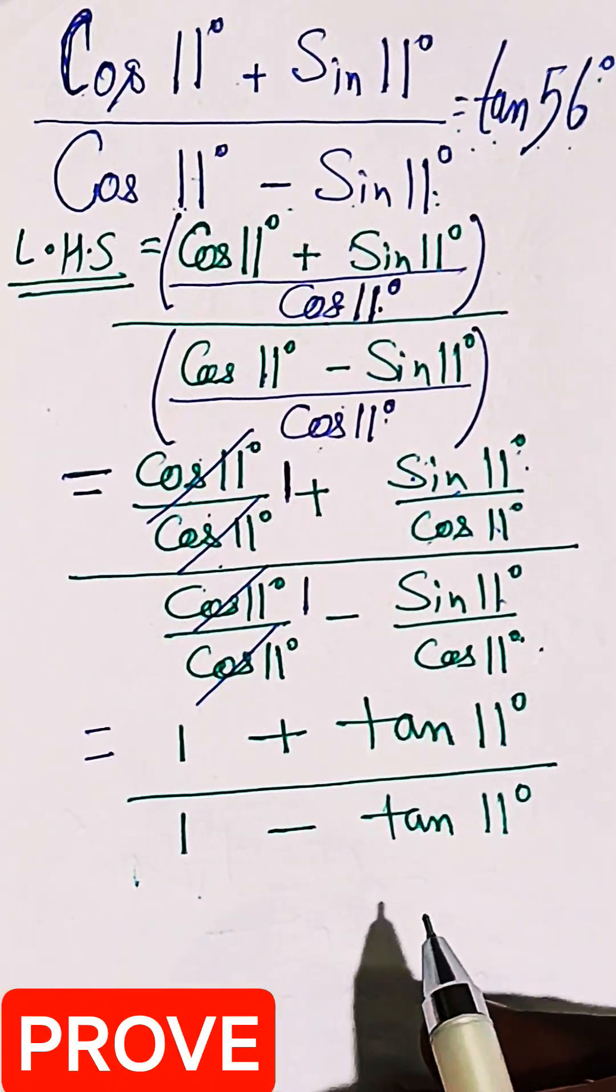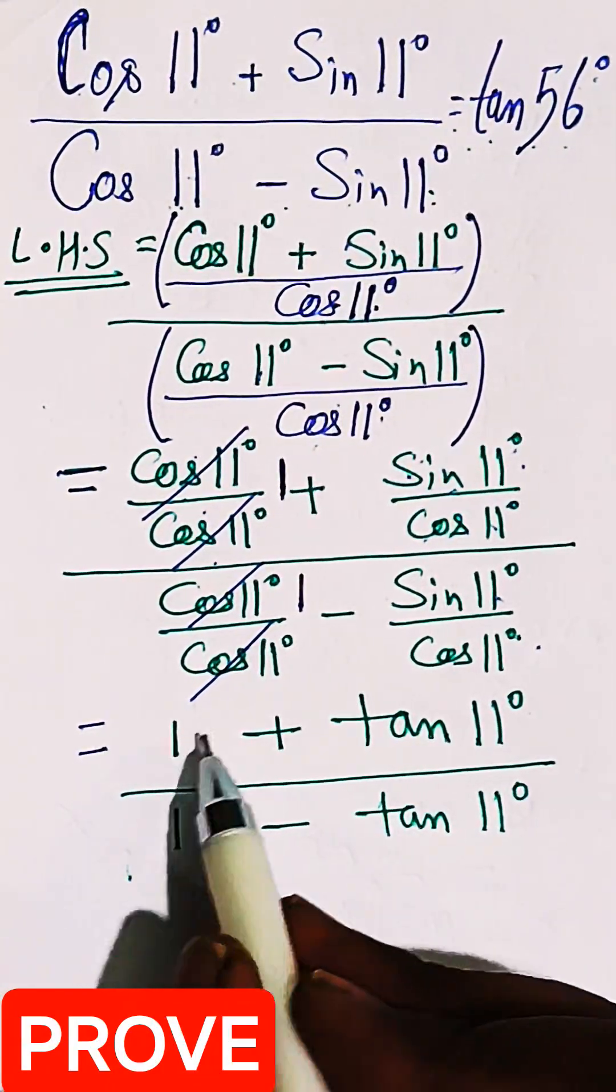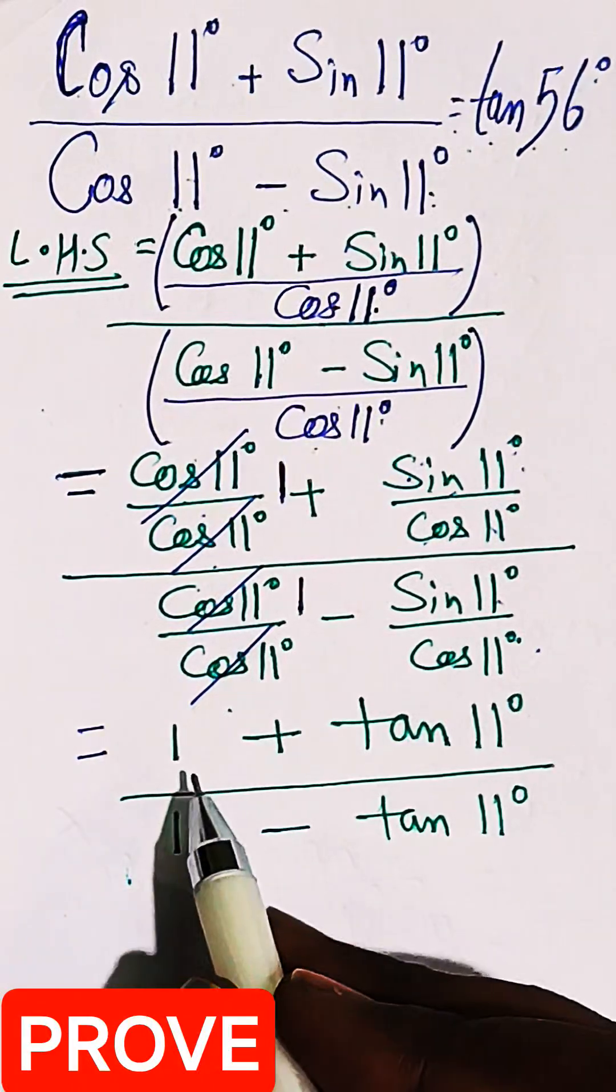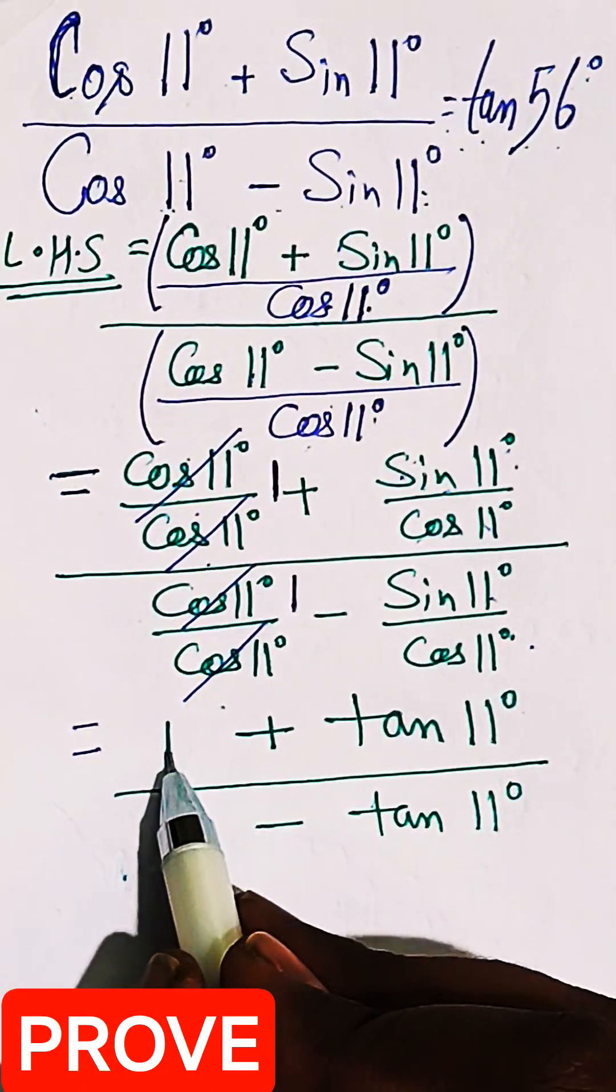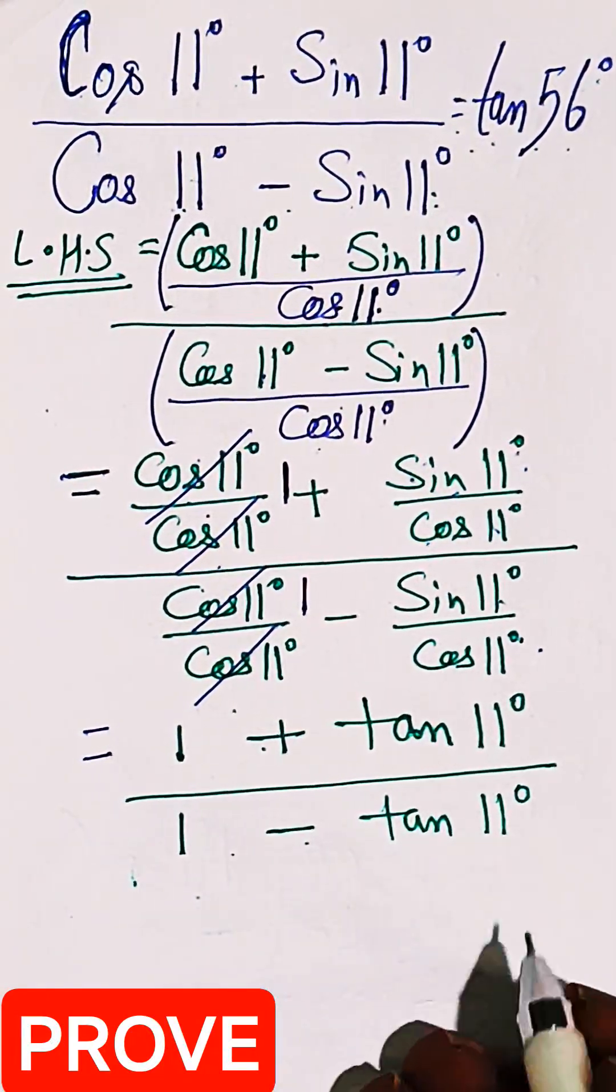Now just recall one formula of tan A plus B, and 1 is the value of tan 45 degrees. So if it will be tan 45 degrees, then it will be converting to tan A plus tan B divided by 1 minus tan A tan B.